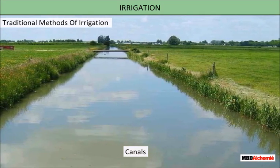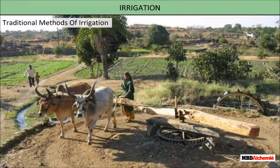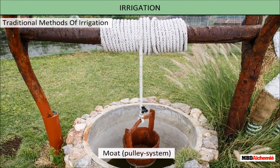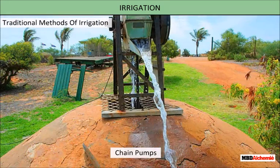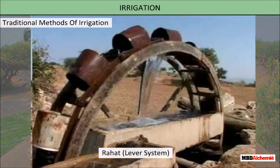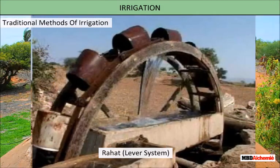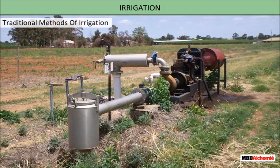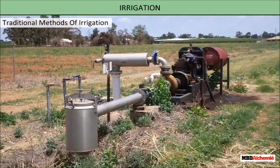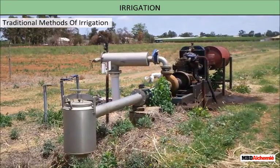In traditional methods of irrigation, water from wells, lakes, and canals is lifted up by different methods in different regions. Cattle or human labor is used, so these methods are cheaper but less efficient. The various traditional ways are: moat or pulley system, chain pump, and rehat or lever system. We commonly use pumps for lifting water, which run with the help of diesel, biogas, electricity, and solar energy.